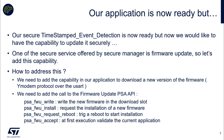We will use four different PSA APIs. The first one, PSA firmware update write, allows writing a new firmware in the downloading slot. Then we have PSA firmware install, which means we have received this new application and we want to trigger an installation.